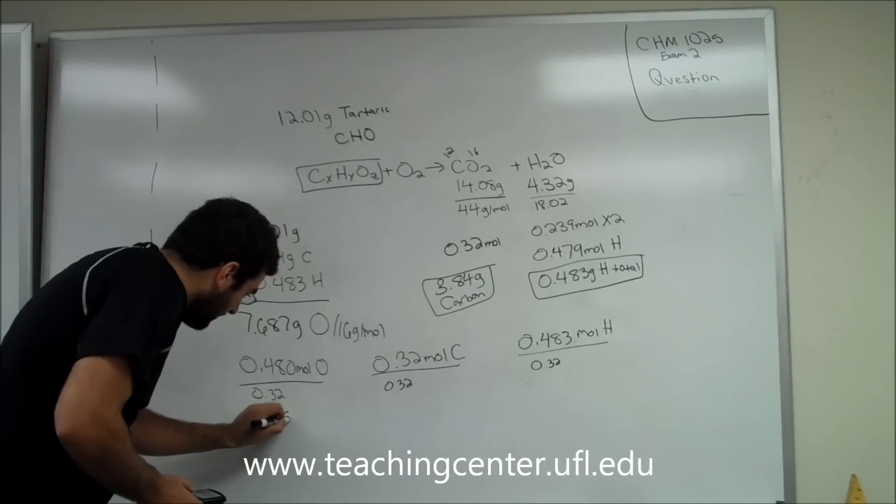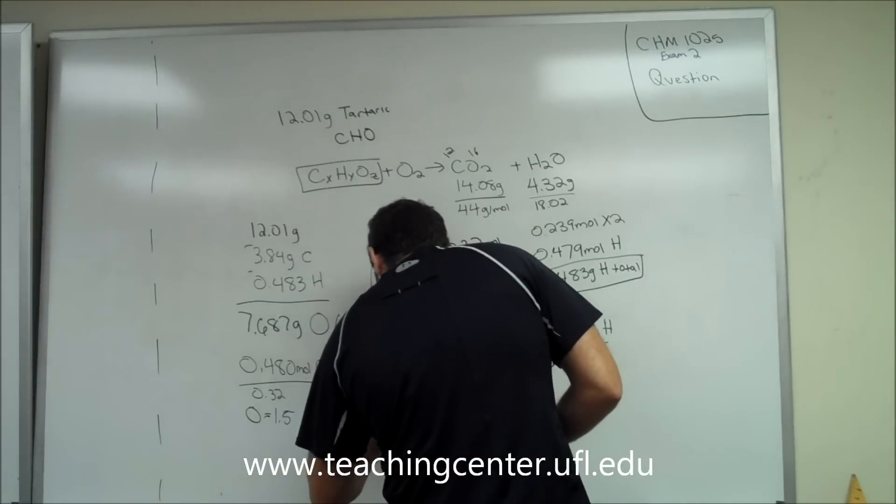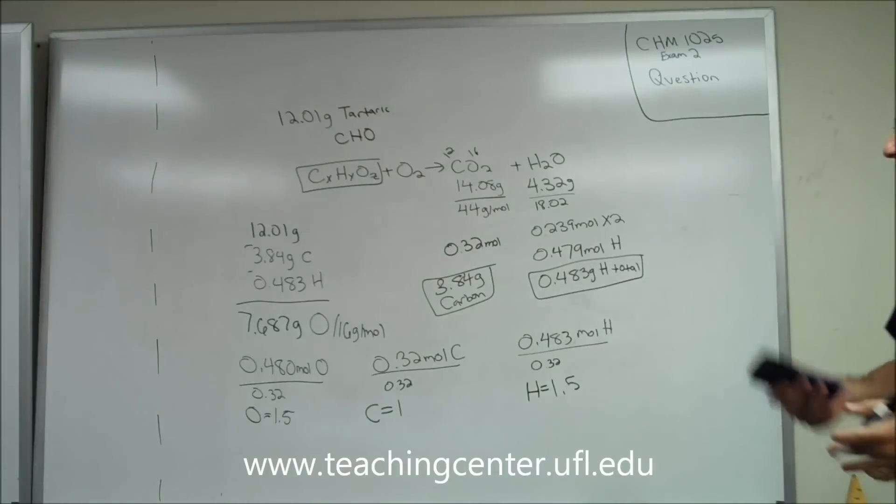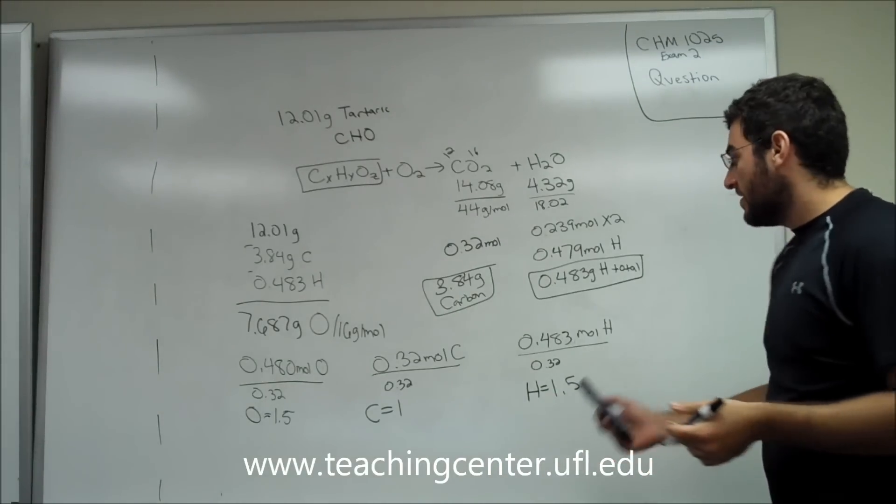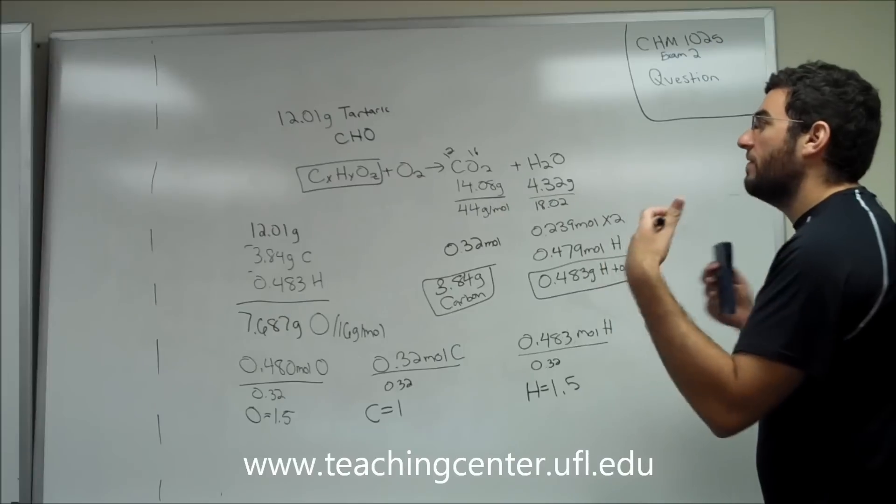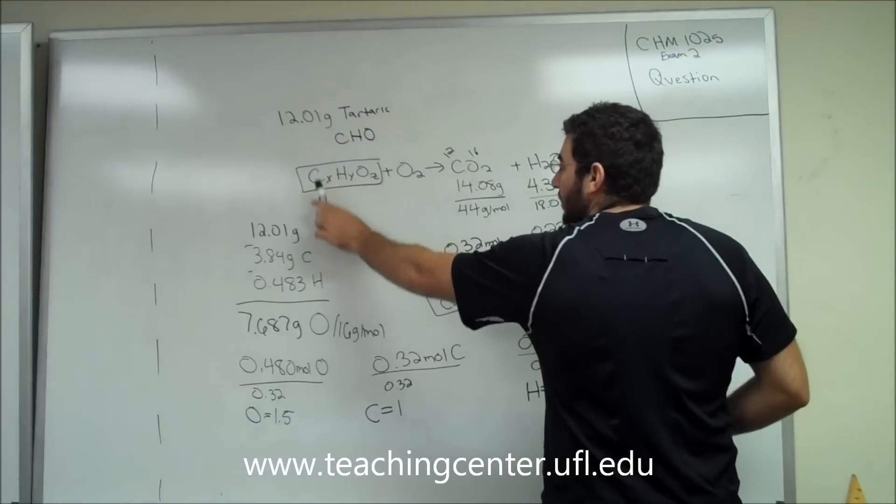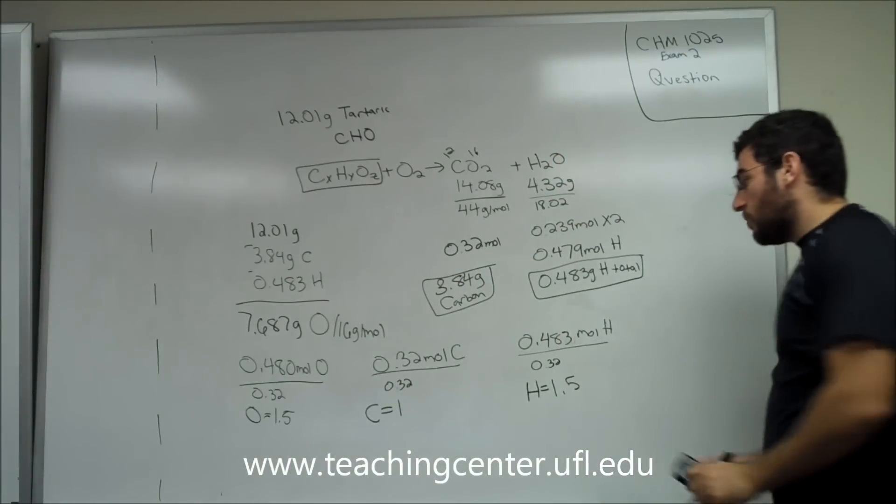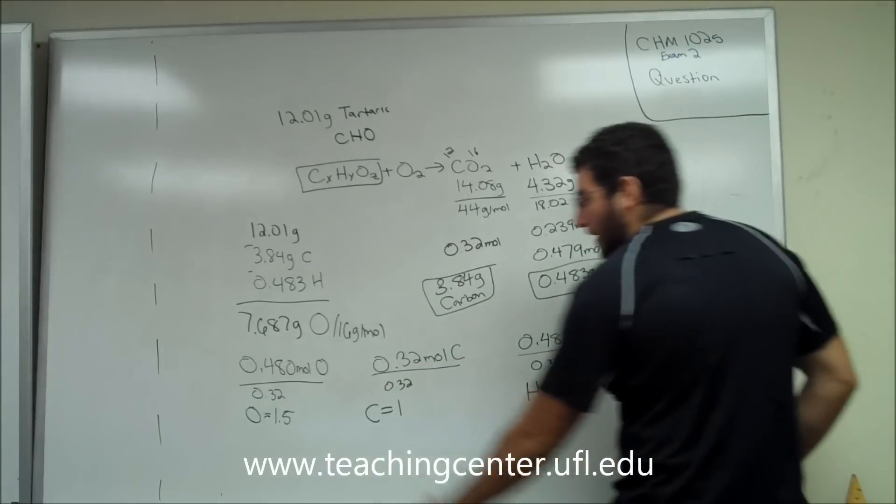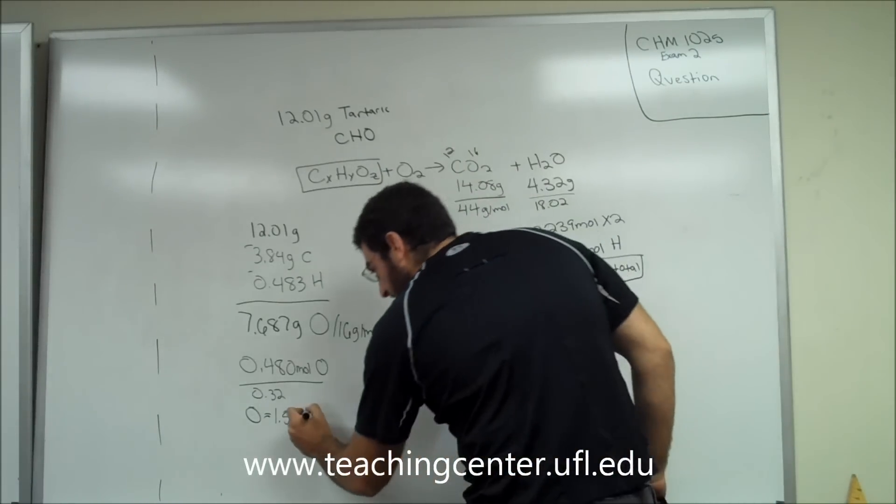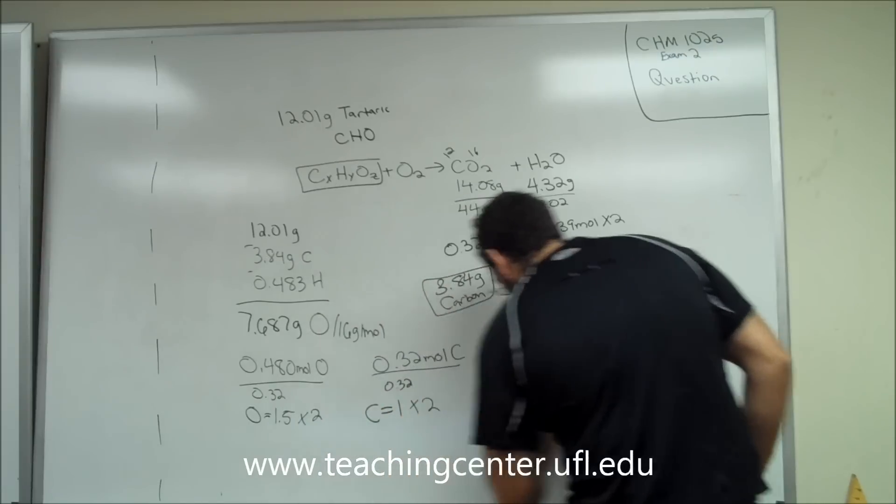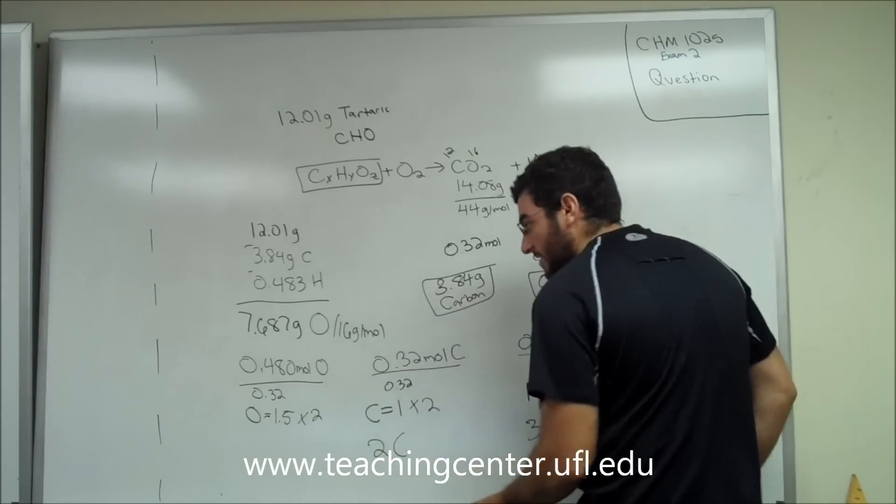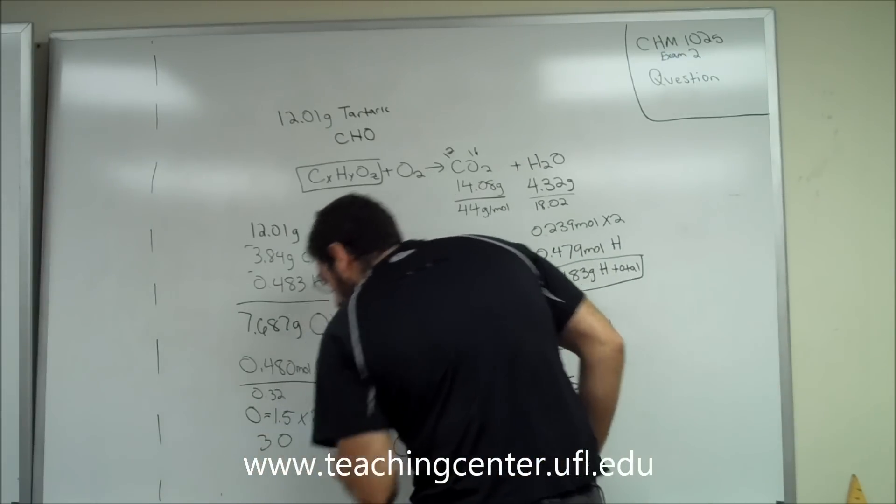So oxygen equals 1.5, carbon equals 1, and hydrogen equals 1.5. Well, is it possible to have 1.5 carbons, or 1.5 oxygens, or 1.5 hydrogens? No. We need whole numbers when we fill in what C-X, H-Y, and O-Z are. So, the easiest way to do it is just double everything, multiply it by 2. So if we multiply everything by 2, we have 3 hydrogens, 2 carbons, and 3 oxygens.